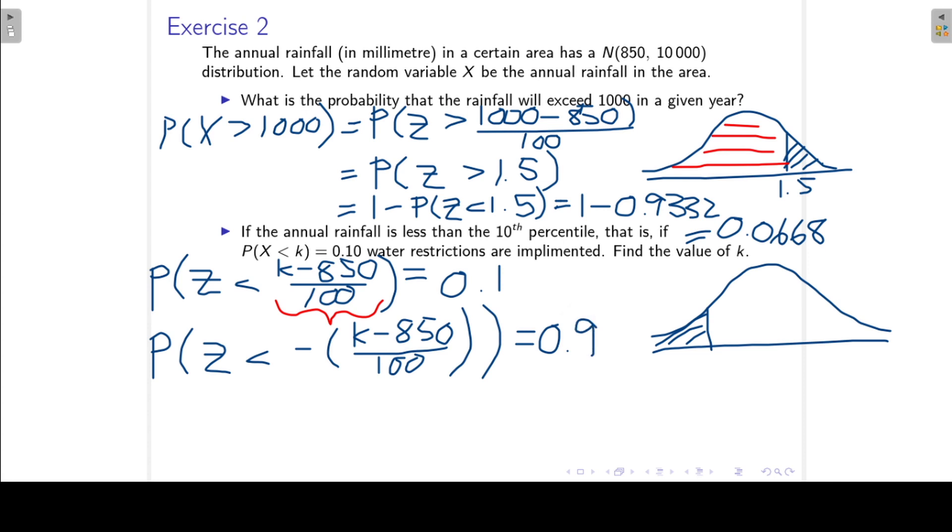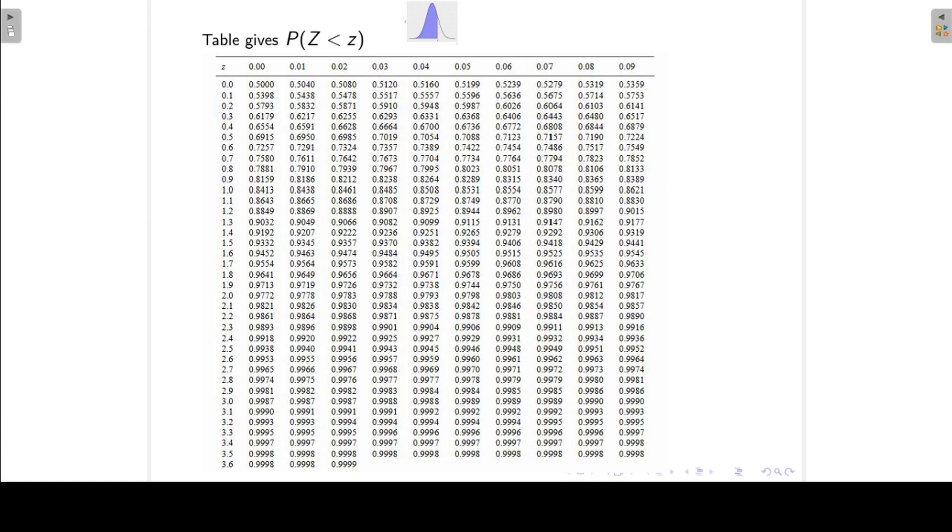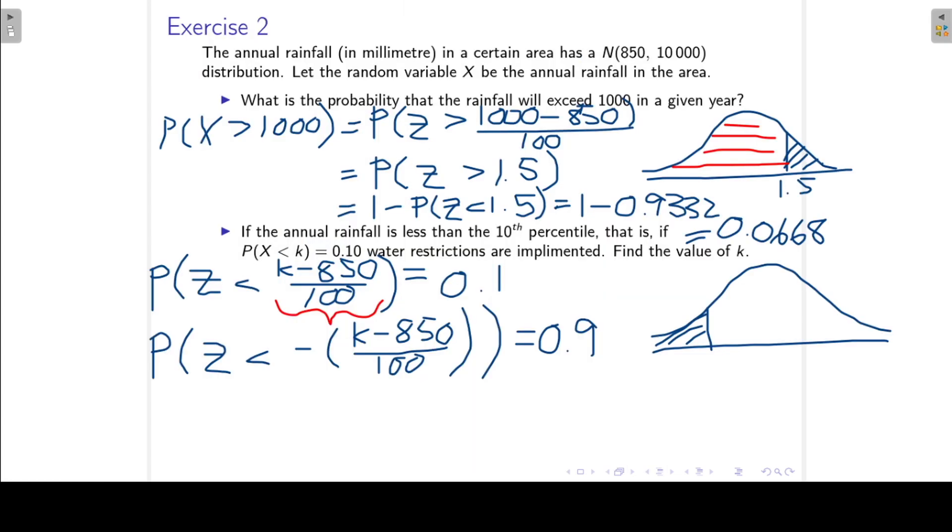Okay, and if we go to our normal tables again, we want to find a probability of 0.9. So if we look up a probability of 0.9, then our corresponding z value, it's close enough to 1.28. So we can say that minus k minus 850 divided by 100 must be equal to 1.28. And then we can solve for k, and we get that k is equal to 725 millimeters.